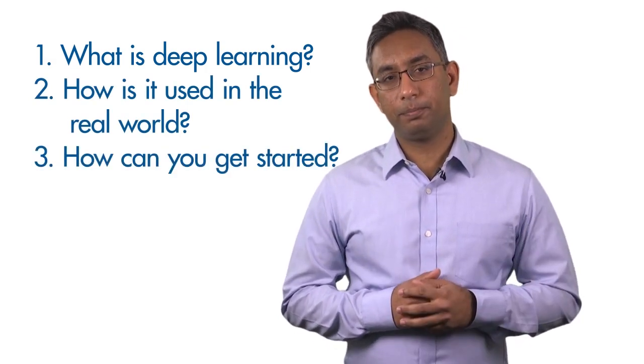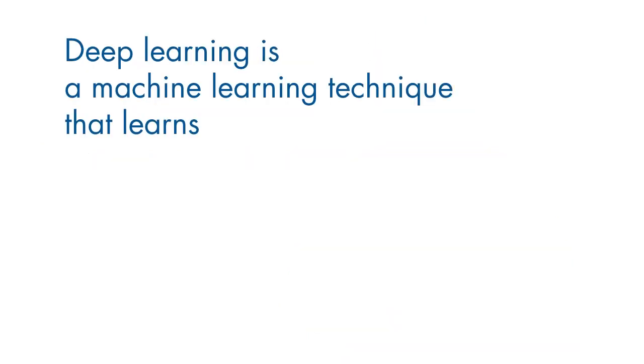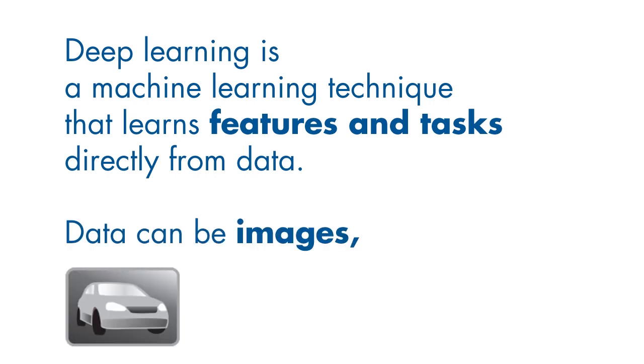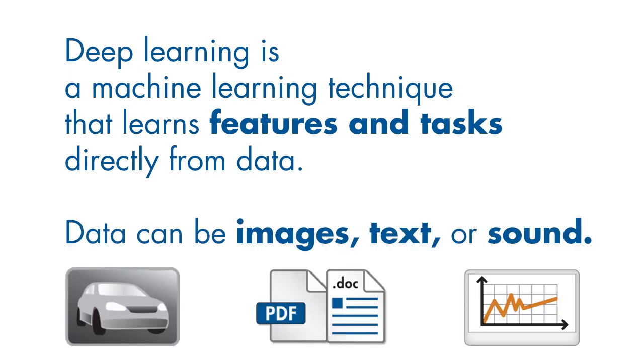So what is deep learning? Deep learning is a machine learning technique that learns features and tasks directly from data. Data can be images, text, or sound. In this video, I'll be using images, but these concepts can be used for other types of data too.